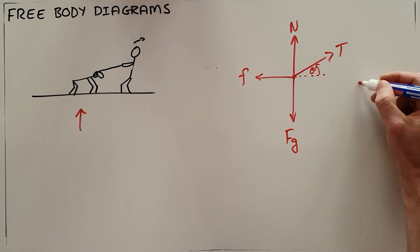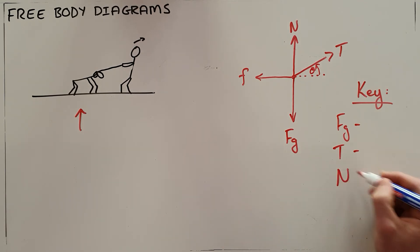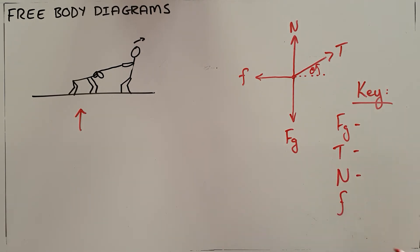It is important to label this free body diagram with a key so that anyone reading it would know that FG represents the force of gravity, T represents the tension, N represents the normal force, and F represents the frictional force. That must be included in the key.